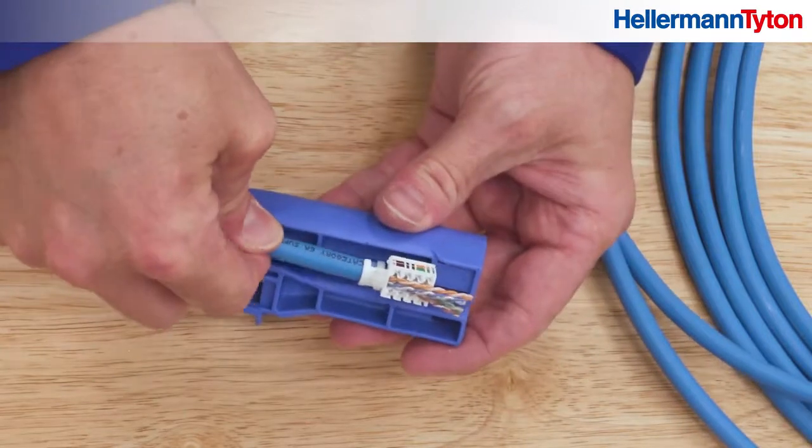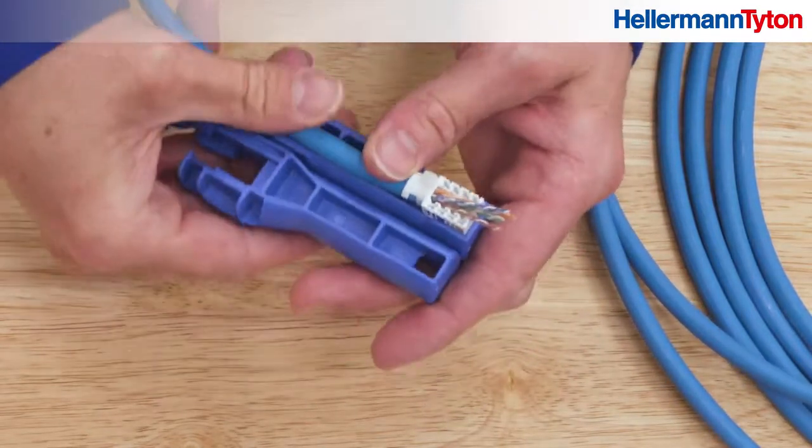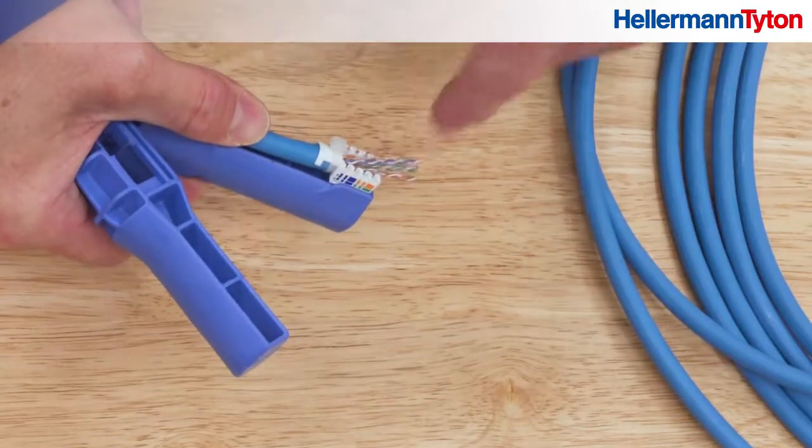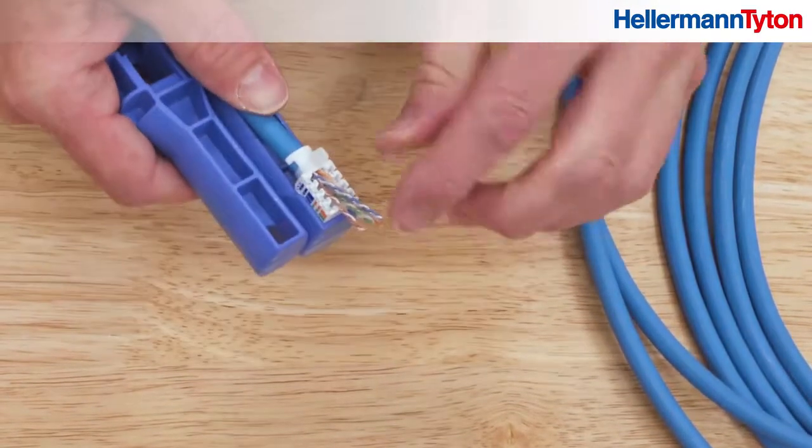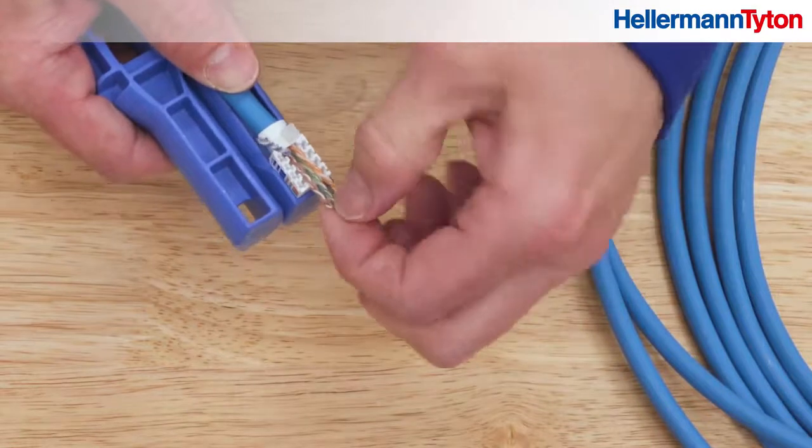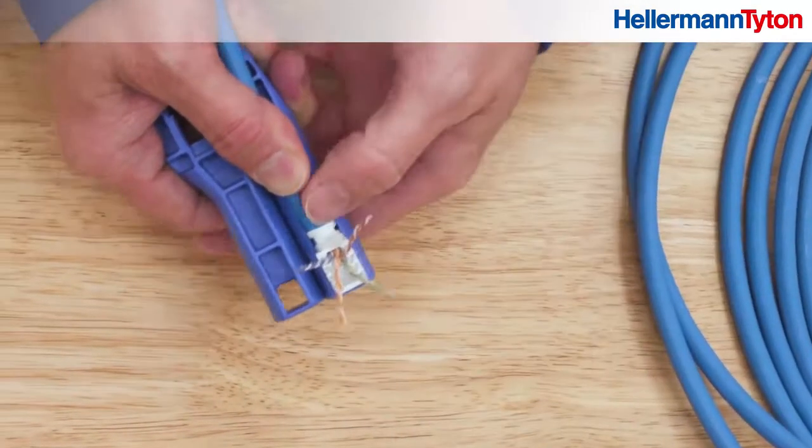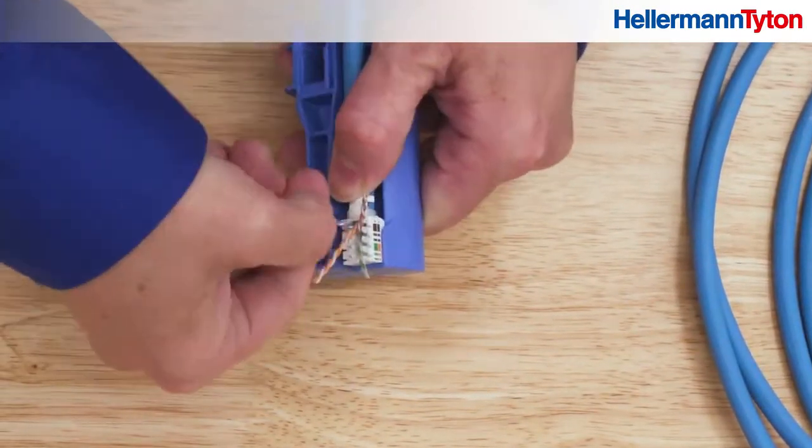Place the manifold into this end of the handle to stabilize it during the lacing process. For this demonstration, we're using the 568B wiring schematic, which is most common. Notice how the color markings, for example solid blue and blue white, correspond to the wire colors.